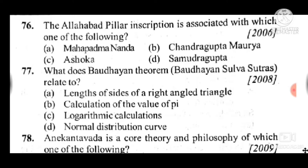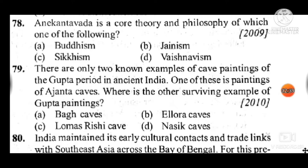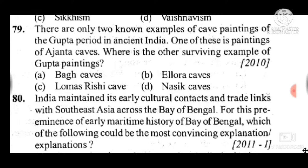Question 77: What does the Sulbasutras relate to? Answer is A, the length of sides of a right-angle triangle. Question 78: The 'Anekantavada' is a core theory in the philosophy of which one? Answer is B, Jainism. Question 79: There are only two examples of cave paintings of the Gupta period. One is Ajanta; the other surviving example of Gupta paintings is — answer is A, Bagh caves.